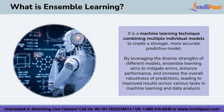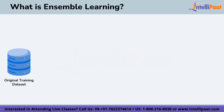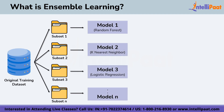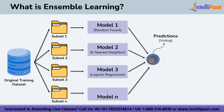By leveraging the diverse strengths of different models, ensemble learning aims to mitigate errors, improve performance, and increase the overall robustness of predictions. It starts with the original training dataset, which gets split into multiple subsets. Each subset is passed to a different model — subset one to model one, subset two to model two, subset three to model three, and so on until the nth model.